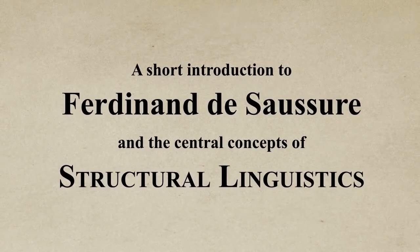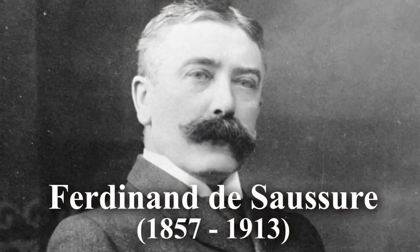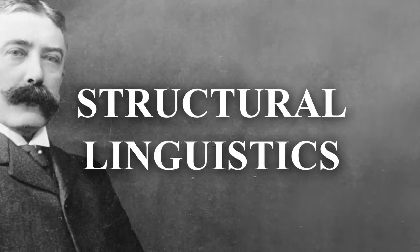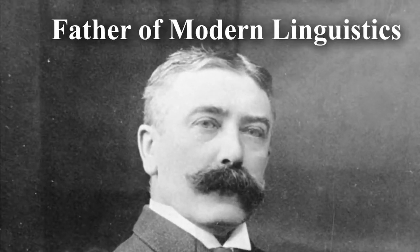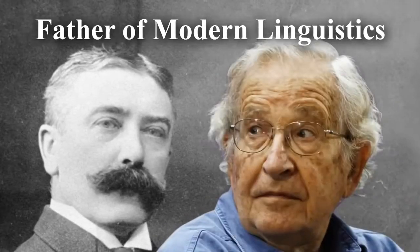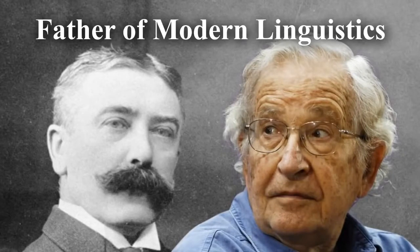This is a short introduction to Saussure, structural linguistics and its central concepts. Ferdinand de Saussure was a Swiss linguist credited with founding the field of structural linguistics, a radical new theory of language as a structured system. He is often referred to as the father of modern linguistics, an honour divided between him and Noam Chomsky, depending on who you ask.